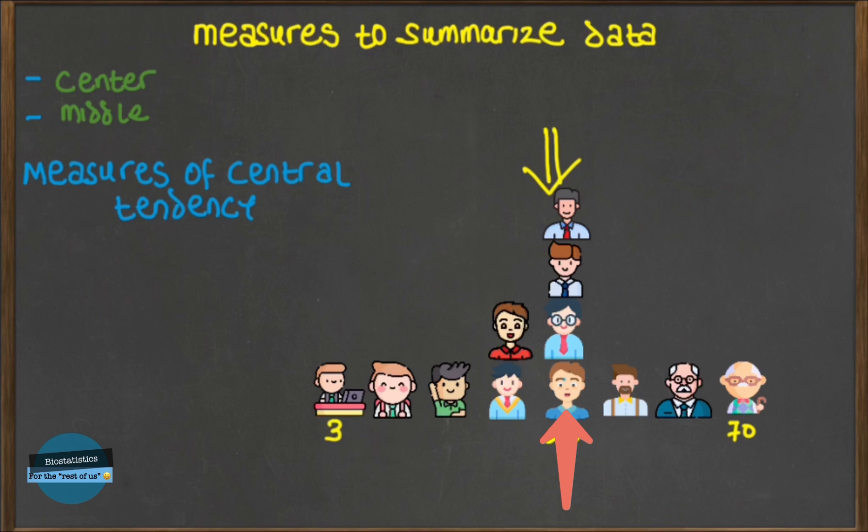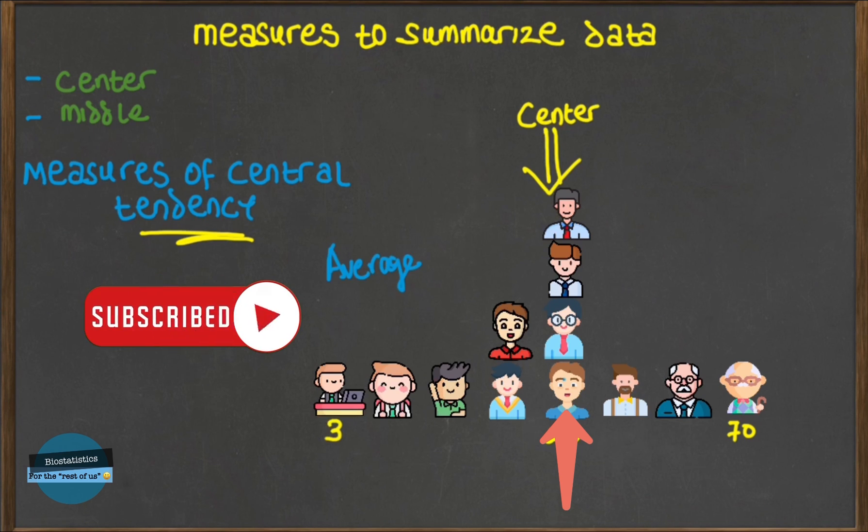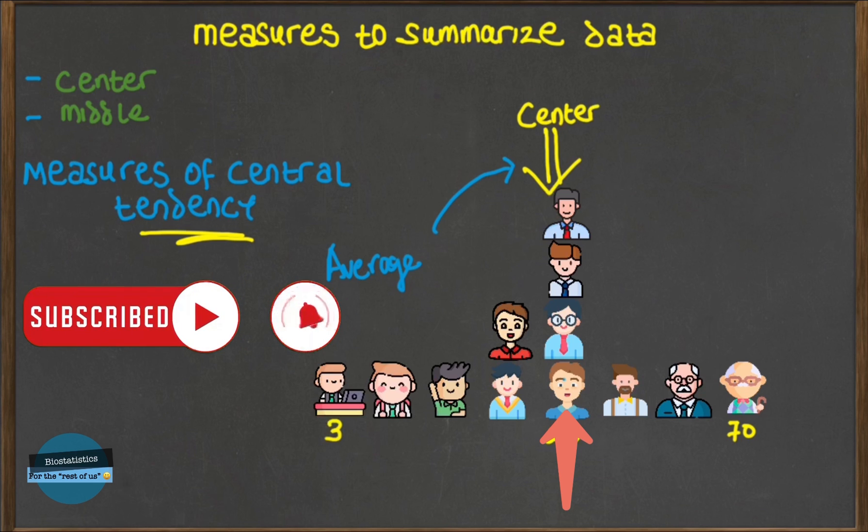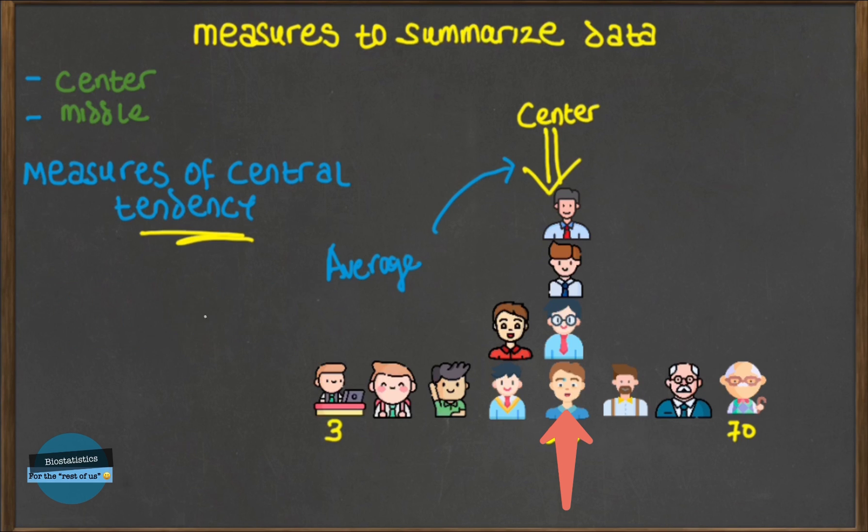That's just the way data is. The way guys have that tendency, data also has this tendency. There's this tendency of the data points to behave in this way. Now the tendency of the data points to behave in this way is called central tendency. They have a tendency towards the center, and the various methods of determining the actual value at which the data tends to concentrate at the center are called measures of central tendency, or more precisely, measures of average.